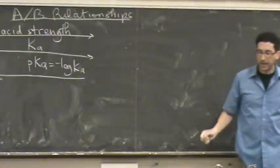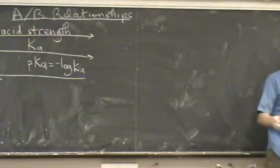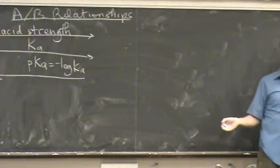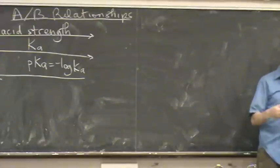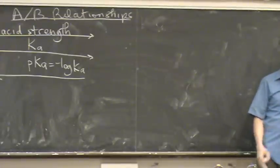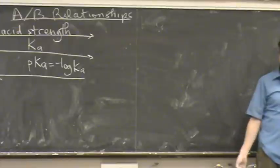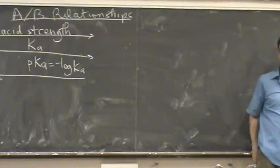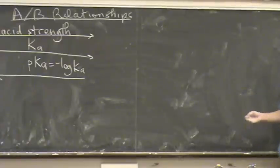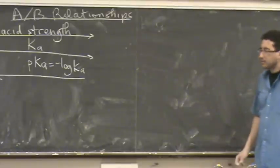So a large Ka, 10,000, means it's a strong acid. But a small pKa means it's a strong acid. So 0.1 for a pKa or 0.2, those are strong acids. Does that make sense? Versus a pKa of 8 or something. Okay. So small pKa means strong acid.